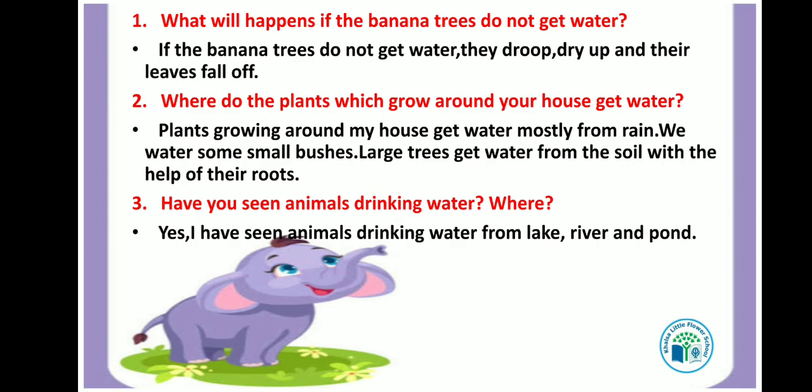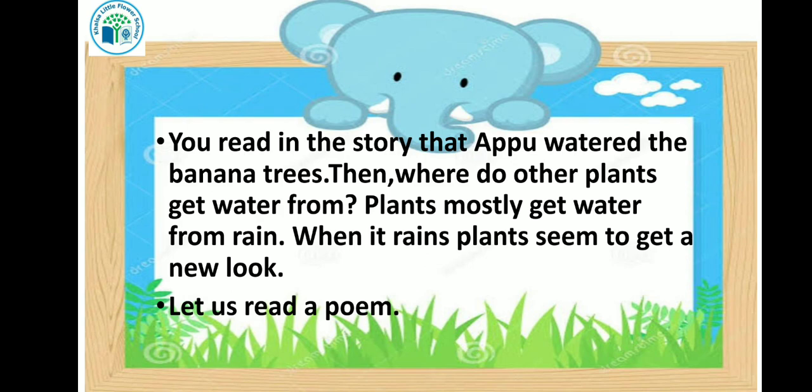Kids, have you seen animals drinking water? I have seen animals drinking water from lakes, rivers and ponds. Plants mostly get water from rain. When it rains, plants seem to get a new look. Just as you can see around you now, during the rainy season the plants around us become very green and lush.